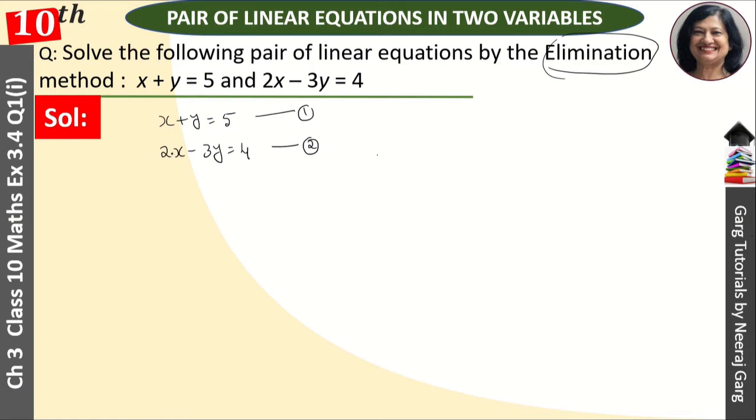Like here we have x and here we have 2x. So if we multiply the first equation by 2, then here also we'll get 2x. So this is what we will do here. We will multiply this equation by 2. When we multiply it, what equation will we get?